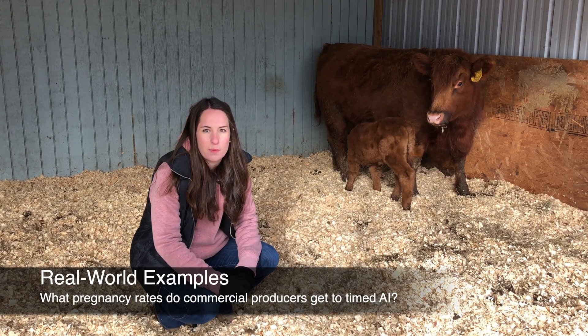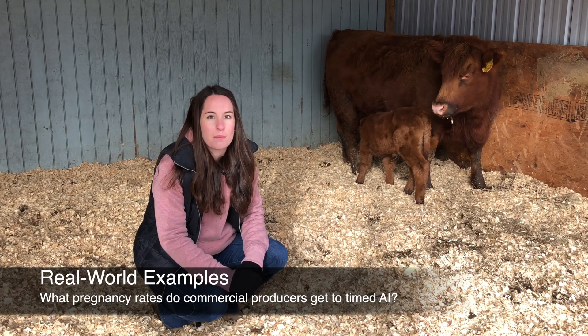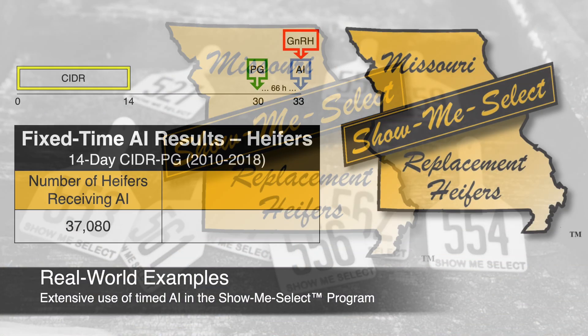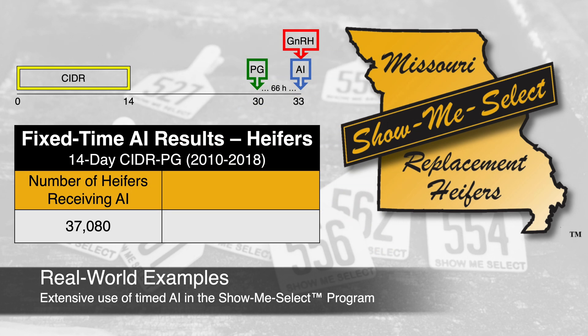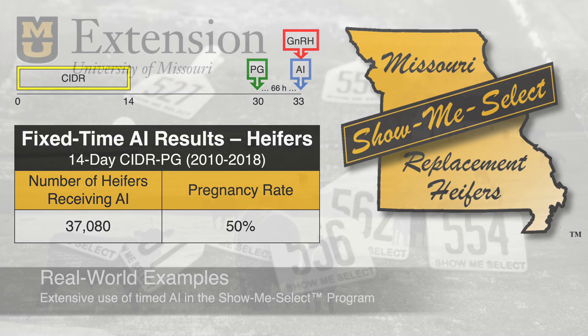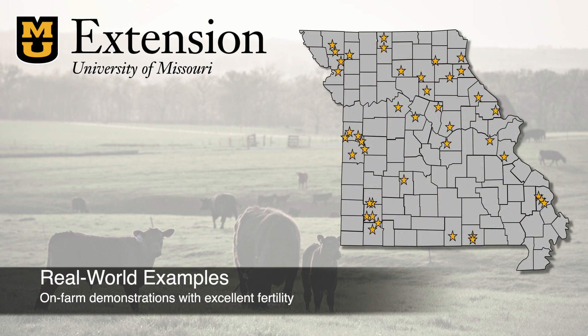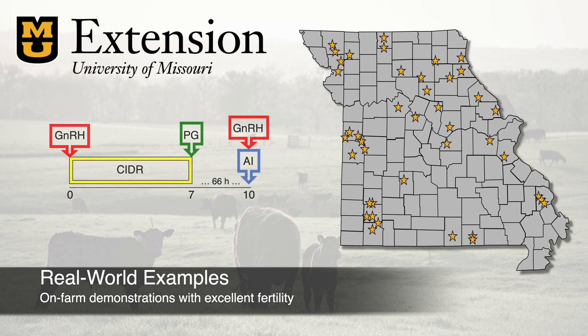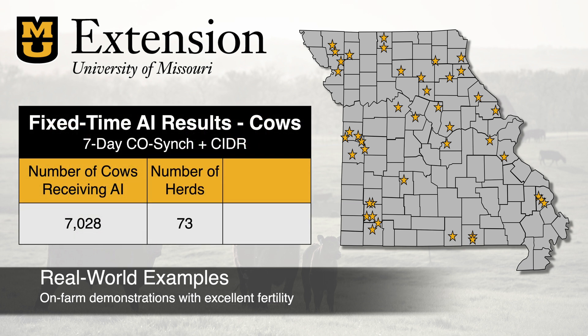So what pregnancy rates can you get from using timed AI on the first day of the breeding season? In the Show Me Select Replacement Heifer program, 37,000 heifers on producer herds across Missouri have received timed AI using the 14-day CIDR protocol. Across all of those heifers, pregnancy rates have averaged 50%. Timed AI works for mature cows too — a large series of field demonstrations across 73 cow herds using the 7-day CO-SYNC plus CIDR protocol found pregnancy rates to timed AI averaged 63% across over 7,000 cows.